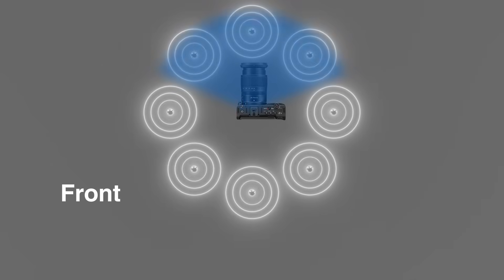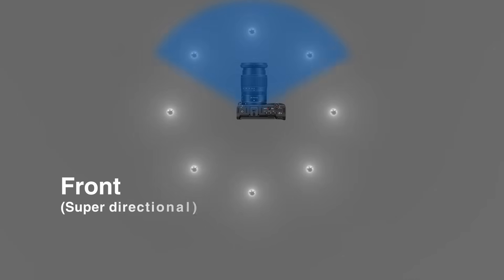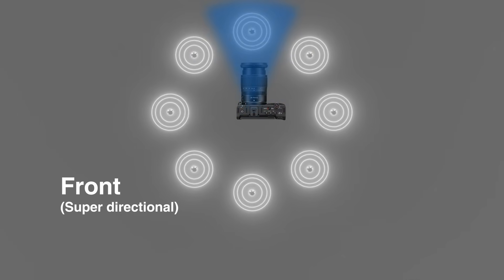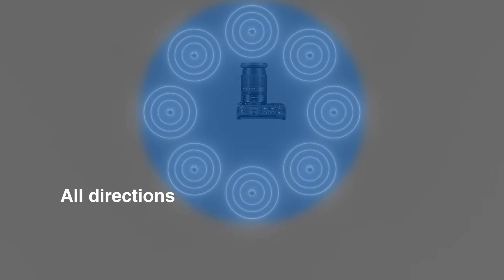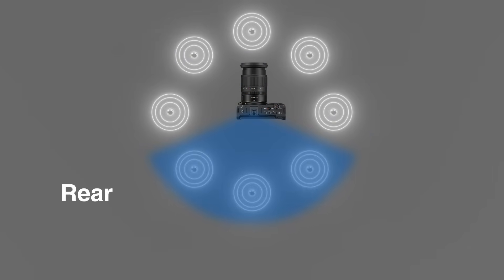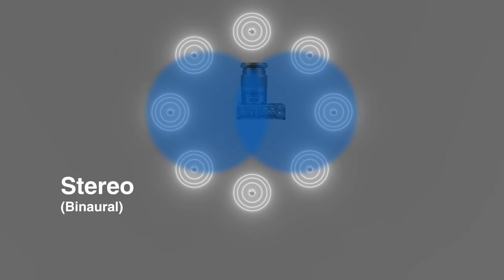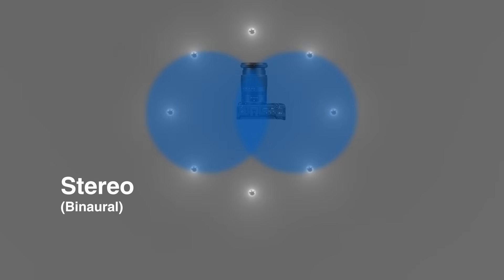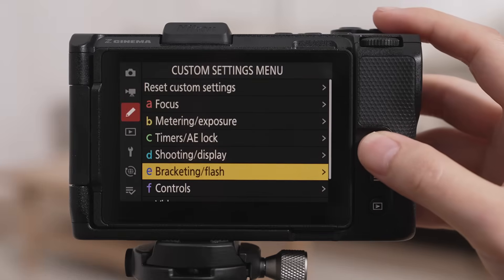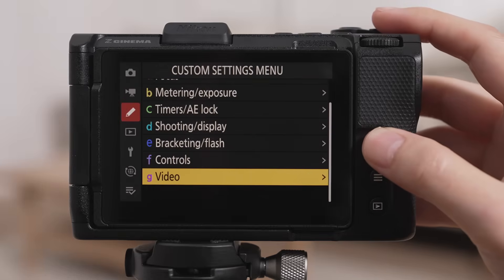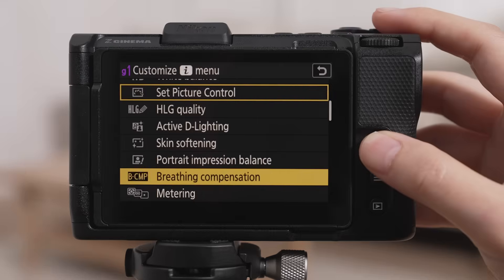For interviews, front or front superdirectional is recommended. All directions is ideal for recording audio of both the subject and photographer, rear for emphasizing photographer audio, and stereo binaural for recording concerts. Registering the built-in microphone options to the iMenu allows for quick and convenient changes.